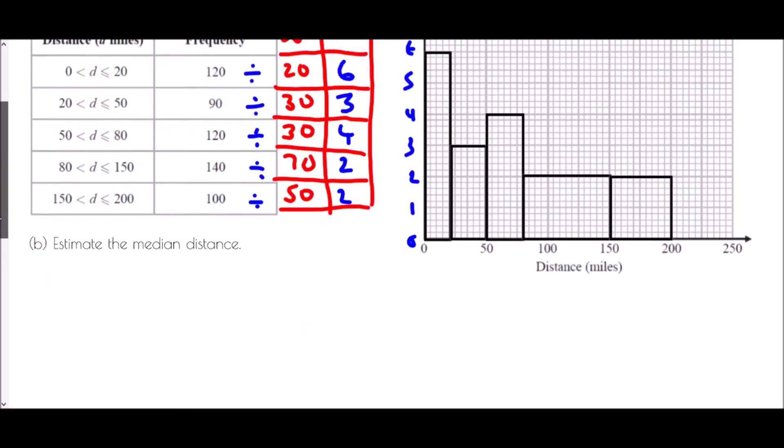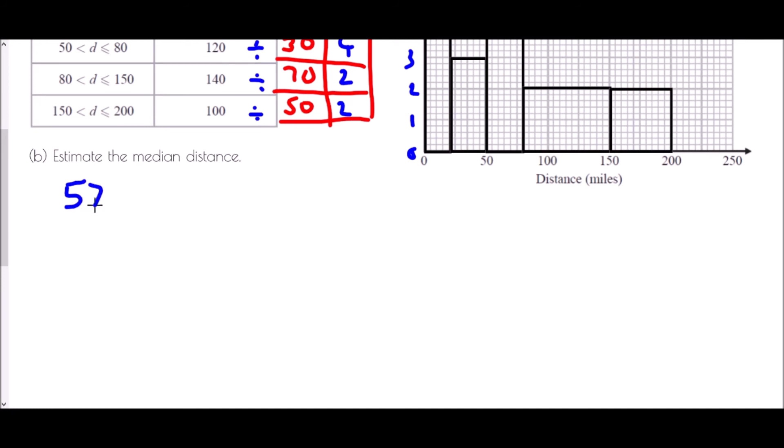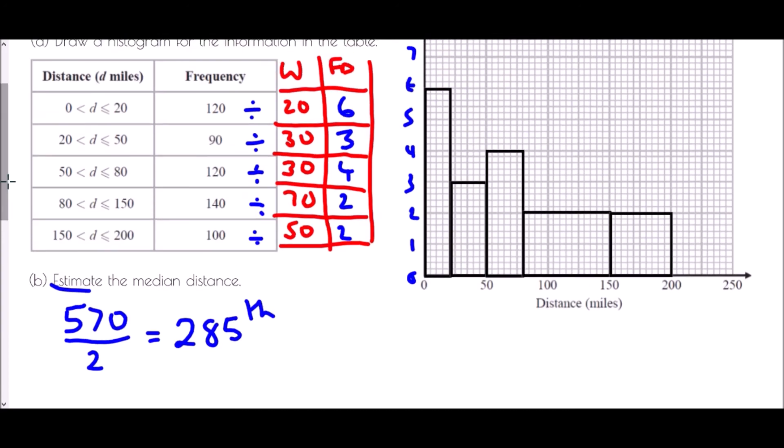We were told it was 570 students so because we are estimating the median, well I can just half this number to find where the midpoint of it is and the midpoint would therefore be 285 or the 285th person.